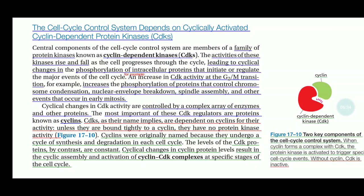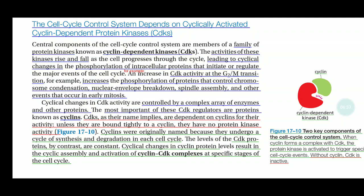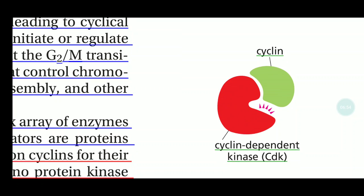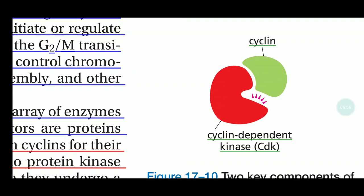Coming to cell cycle control: the system depends on cyclically activated cyclin-dependent protein kinases (CDKs). The cyclin and CDK form a complex with each other to regulate various phases of the cell cycle. The cyclin molecules undergo cyclical degradation and are re-synthesized to become functional again.